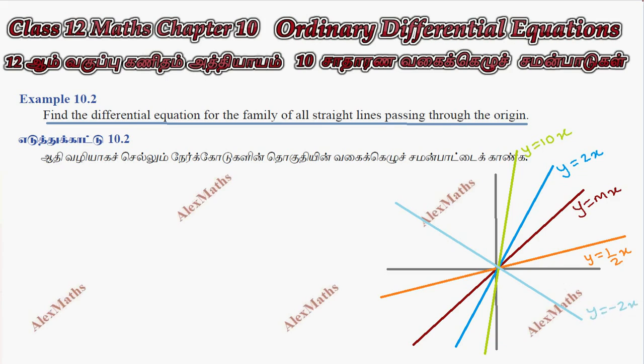But all of these lines are passing through the origin. This point passes through (0,0). So the general equation is y equals mx.